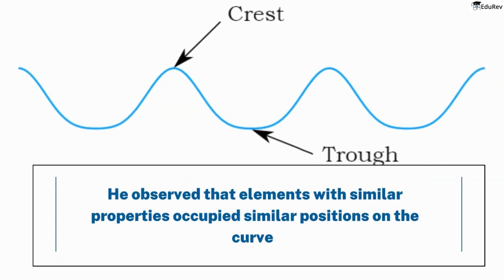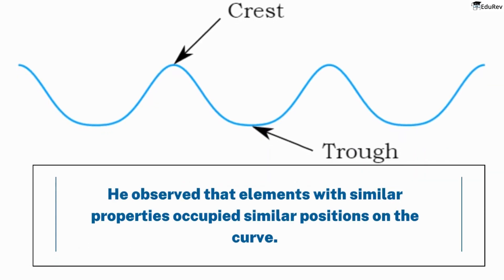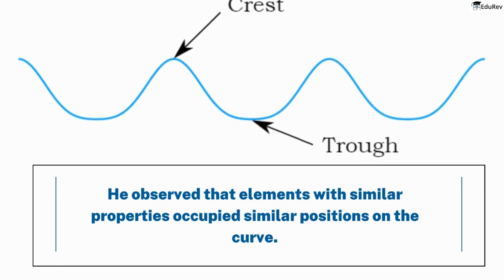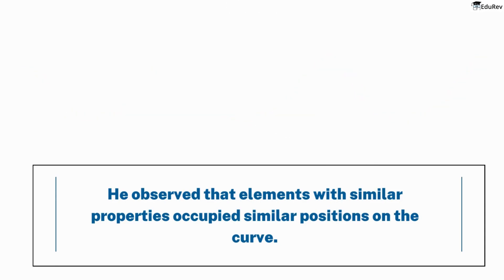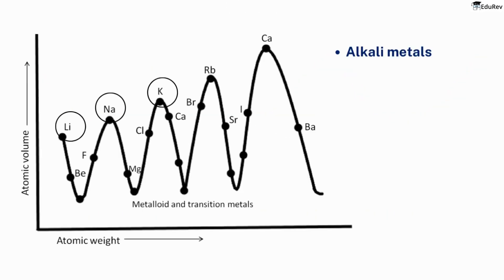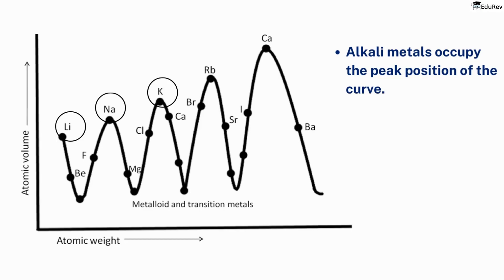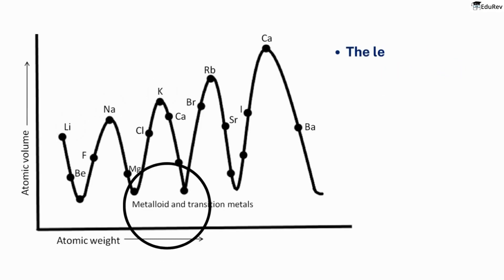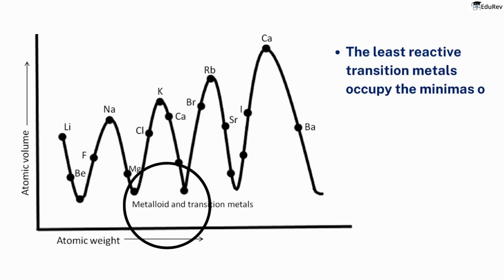Firstly, he observed that elements with similar properties occupied similar positions on the curve. For example, the alkali metals like lithium, sodium, and potassium occupy the peak position of the curve. The least reactive transition metals like iron, manganese, cobalt, and nickel occupy the minima of the curve.